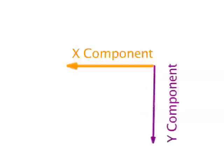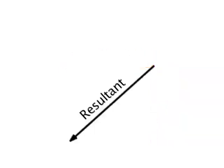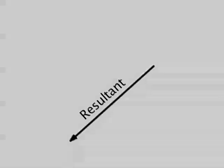When a vector acts at an angle, we can break it up into x and y components. Here's the resultant of the two components.